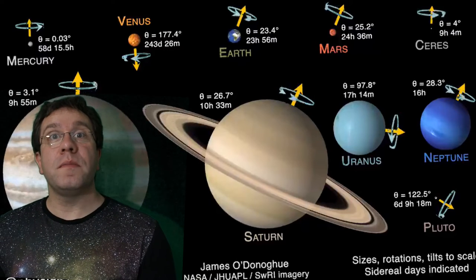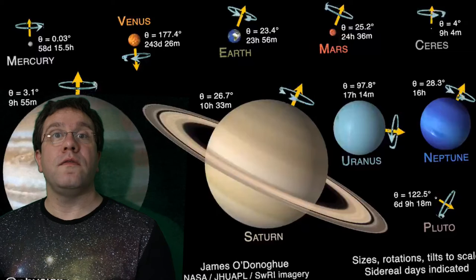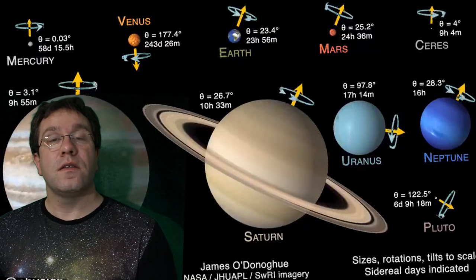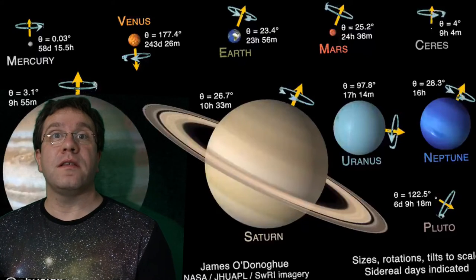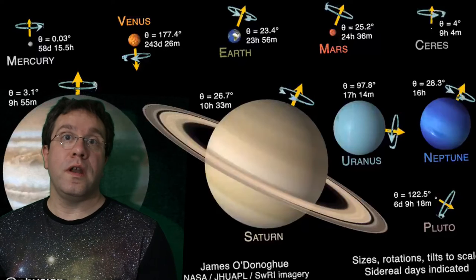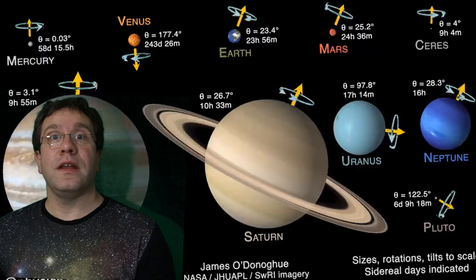Mercury spins a little bit quicker, in a little over 58 days. So the rocky planets have spins that are measured in days: one day for Earth and Mars, 243 days for Venus.